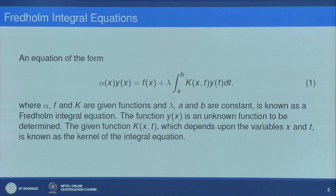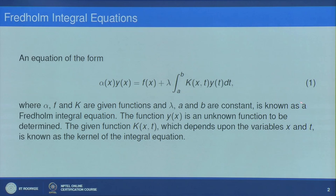Recall that an equation of the form α(x)·y(x) = f(x) + λ∫ₐᵇ k(x,t)·y(t)dt, where the unknown function y(x) appears both under the integral sign and outside, is known as an integral equation. If the limits are constants, we say it is a Fredholm integral equation. Here α, f, and k are given functions, λ, a, and b are constants. We call this equation 1 the Fredholm integral equation, and y(x) is the unknown function to be found. The given function k(x,t), which depends on variables x and t, is known as the kernel of the integral equation.